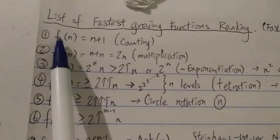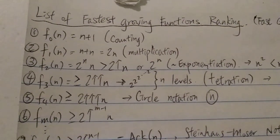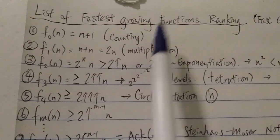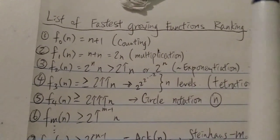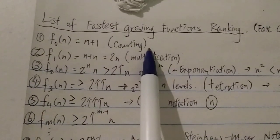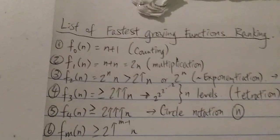First of all, we're going to look at F0(n) using the fast-growing hierarchy, which is basically equal to n+1, which is counting or addition. And a disclaimer is that this is not the slowest-growing function. There are functions that grow slower than that, but we're not going to cover that in this video.